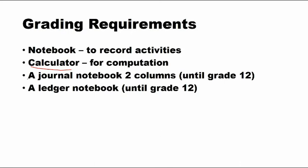The third requirement is a journal notebook and a ledger. For the journal notebook, I only need the 2-column type. These will be used until Grade 12. Together with the ledger notebook, both will be used all the way through Grade 12. It is very important to have both of these since they are the main topics in Accounting 1 and Accounting 2.